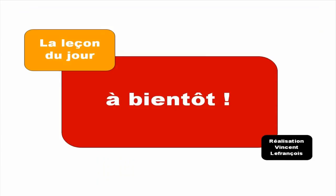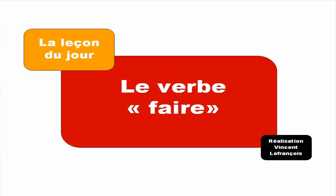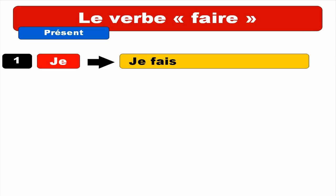Bonjour tout le monde. C'est la leçon du jour. Today we will see le verbe FAIRE — FAIRE means to do. It's a quite useful verb and also a bit tricky. So now we can start. First form for JE — it's JE FAIS. Final S is not pronounced. JE FAIS. Repeat. JE FAIS.